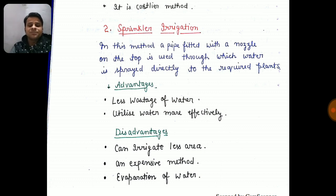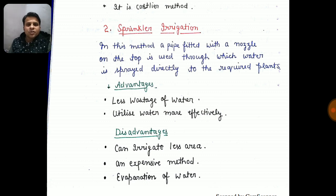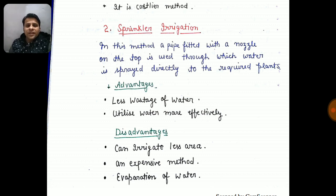The advantage of sprinkler irrigation is less wastage of water. The wastage of water is reduced compared to furrow irrigation, and water is utilized more effectively. Now if we talk about disadvantages, we can irrigate a smaller area. The sprinkler can only cover a limited area. Second, it is an expensive method. Third, there is evaporation of water — the sprinkled water can evaporate and be wasted.